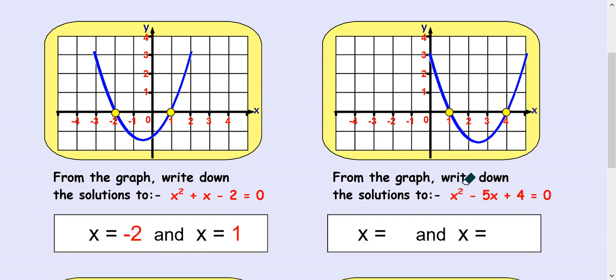Okay, next one. Here's the graph already drawn of x squared minus five x plus four equals zero. So the two solutions, just by looking at the graph, are one and four. That's all you have to do, write one and four.